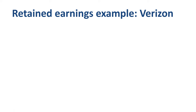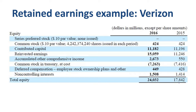The concept of retained earnings becomes a lot more clear if we walk through an example. Here is the overview of telecom company Verizon's equity balance at the end of 2015 and the end of 2016. Equity was $17.8 billion at the end of 2015, and $24 billion at the end of 2016. Equity consists of many line items, and one of the largest items is retained earnings: $11.2 billion at the end of 2015 and $15.1 billion at the end of 2016.